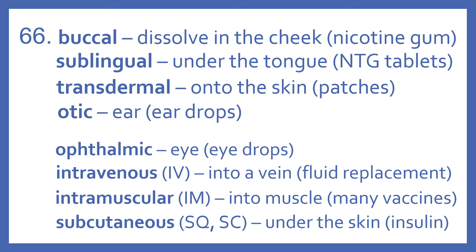Intramuscular, or IM, means into a muscle — many vaccines are administered this way. And subcutaneous, abbreviated SQ or SC, means under the skin. Insulin is a product that is administered subcutaneously.